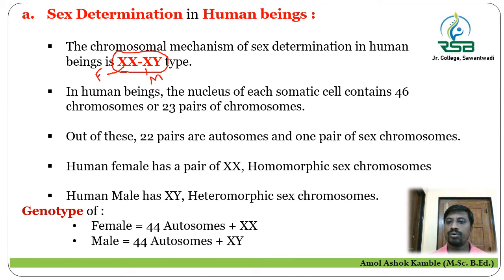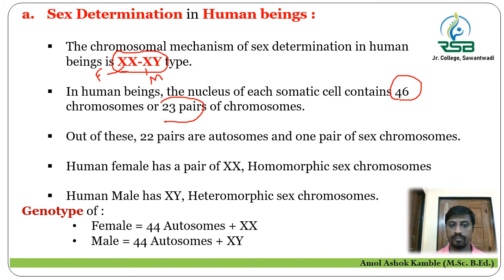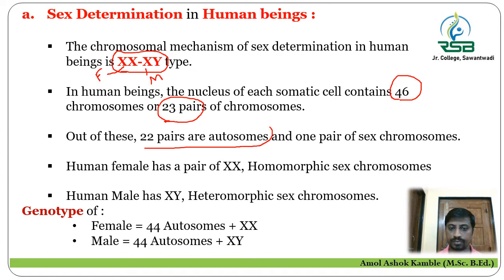There are a total of 46 chromosomes present in human beings, whether male or female — that is 23 pairs of chromosomes. Out of these 23 pairs, 22 pairs are autosomes, which determine body characteristics, and only one pair is the sex chromosome pair.